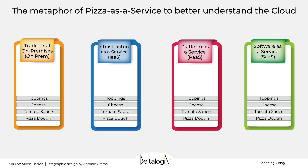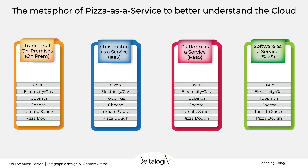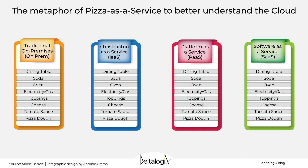Taking up the subject again: after preparing pizza, it obviously needs to be cooked, so we can consider resources such as electricity or gas and the oven. Then, as soon as our pizza is ready, we can choose soda to accompany it — and I'm sure you're not thinking of cappuccino, right? And finally, a dining table. What's the feature differentiating these sections? The entity who manages these components. There are two possibilities: you manage, or vendor manages.